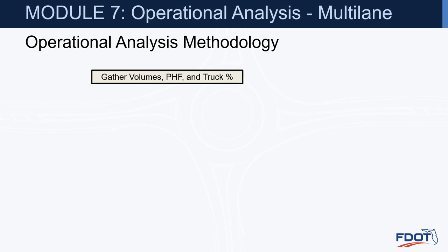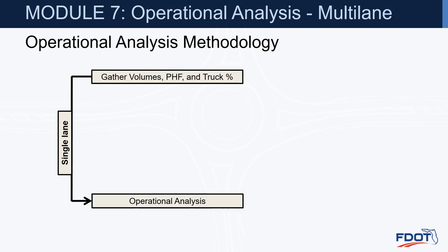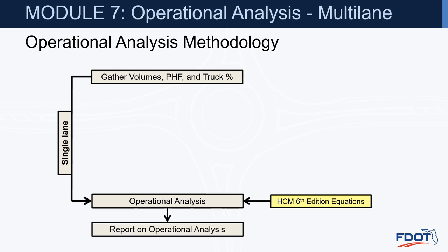The first step in our methodology is to gather our volumes, our peak hour factor, and truck percentages. If we know our volumes are low and that it's going to be a single lane roundabout, we can go ahead and complete our operational analysis using the HCM 6th edition equations and then complete a report for our operational analysis.